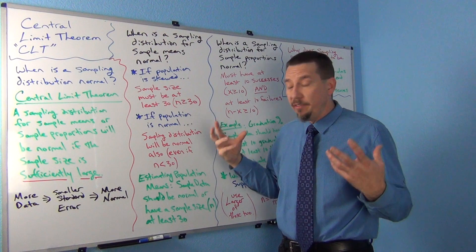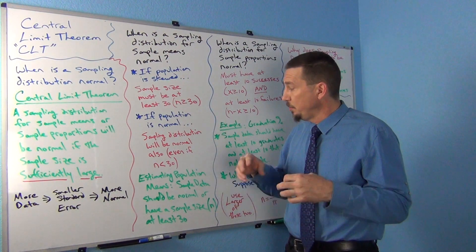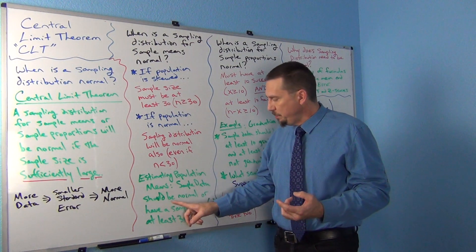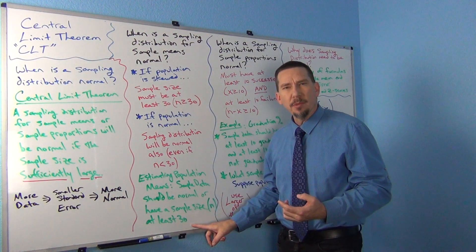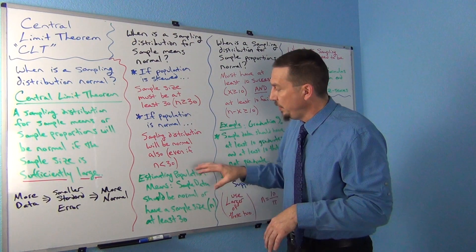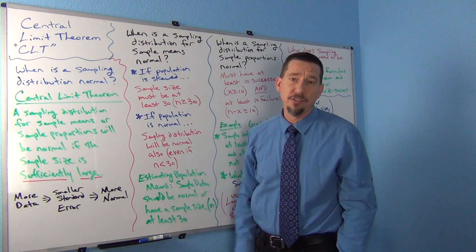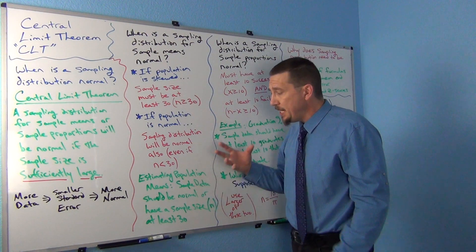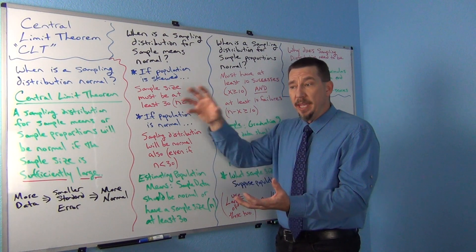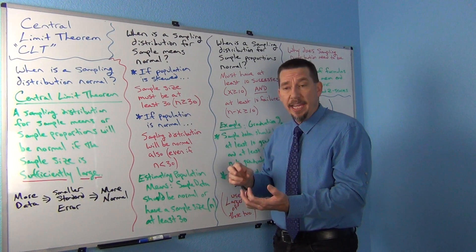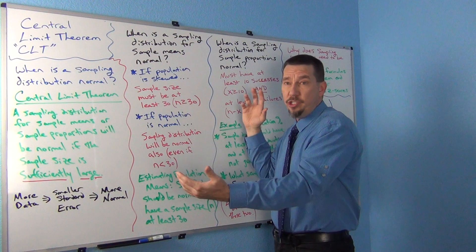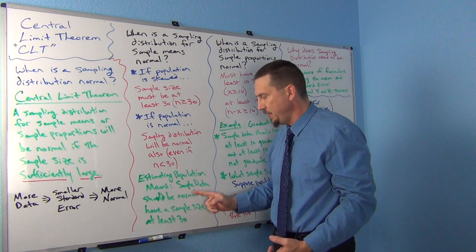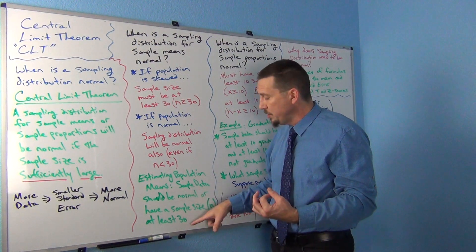This is where we get a very famous assumption in inferential statistics when estimating population means. Any technique that estimates population means usually requires that the sample data be normal or have a sample size of at least 30 — we call that the '30 or normal' requirement. So if you had a data set of n=23 and the histogram looked bell-shaped, that'd be okay. If your histogram looked very skewed left but your sample size was 50, that'd be okay too. It is an OR statement — it doesn't mean both things have to be true, just one or the other. Either the data has to look normal or the sample size has to be at least 30.